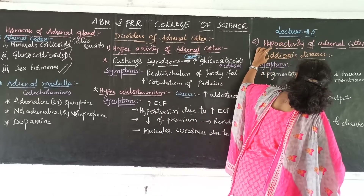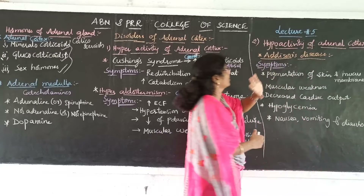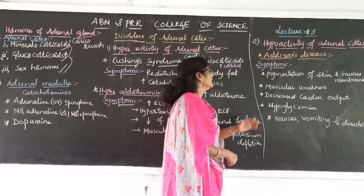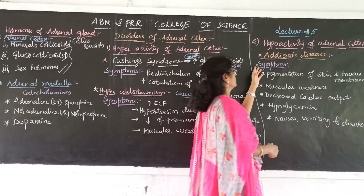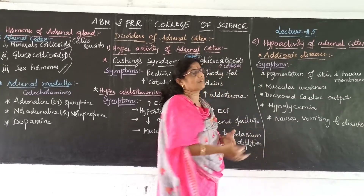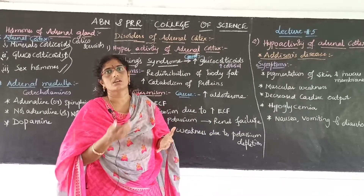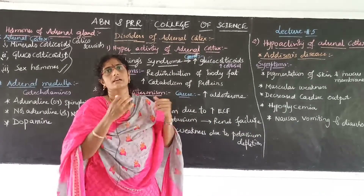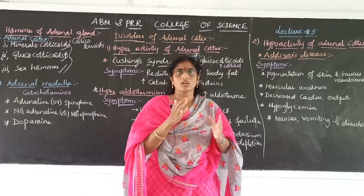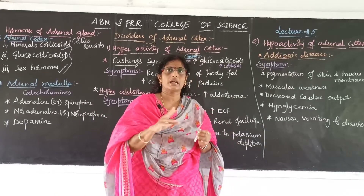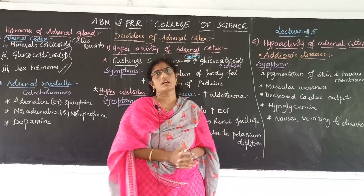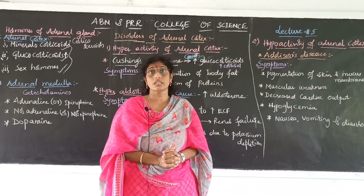Hypoactivity of the adrenal cortex leads to a disease called Addison's disease. This occurs because both mineralocorticoids and glucocorticoids are not being released properly. In adrenalectomy situations, the adrenal gland is removed, so adrenal cortical hormones are no longer released.